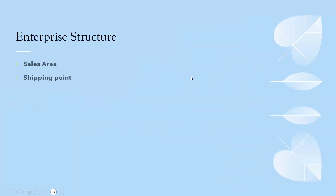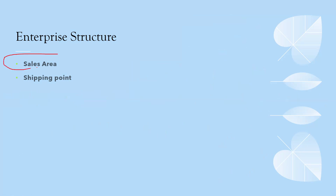First, the SAP SD consultant is responsible for creation of the enterprise structure. This includes the sales area — that is, sales organization, distribution channel, and division. He is responsible for creating the sales area and also for creating the shipping point. A company can have more than one shipping point, and it should be assigned to a plant. Check the link provided in the description for enterprise structure in SD. Main implementation starts from enterprise structure.